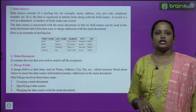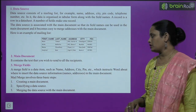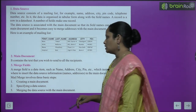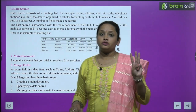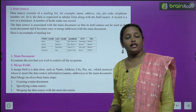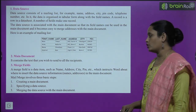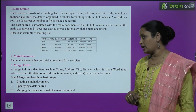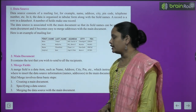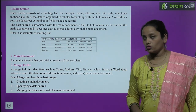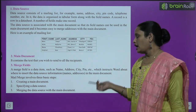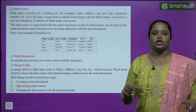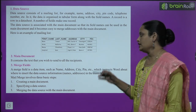The merge field tells Word where to insert data source information in the main document. Mail merge involves three basic steps: first, create a new main document; second, specify the data source; and third, merge the data source with the main document.